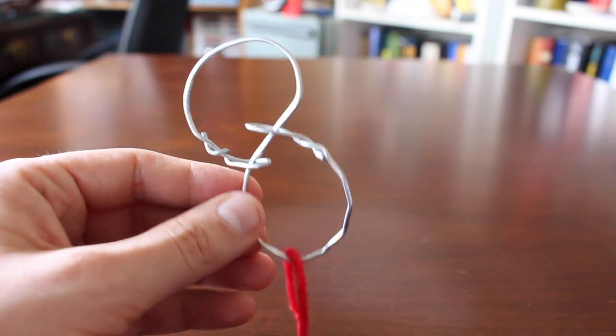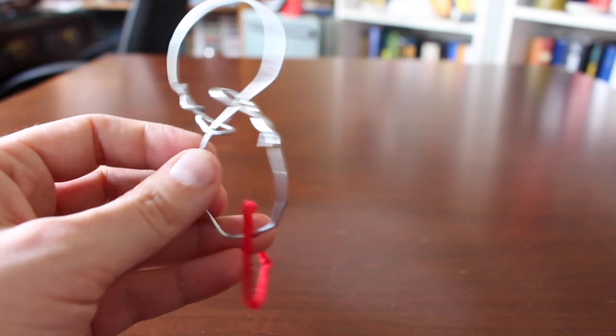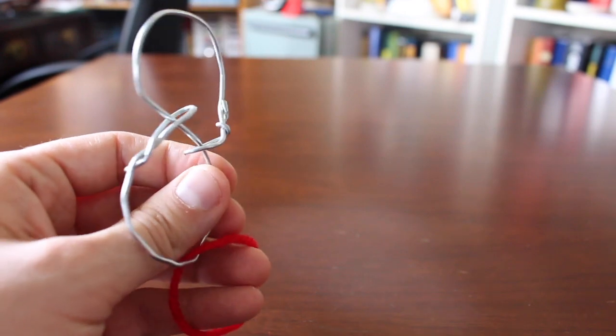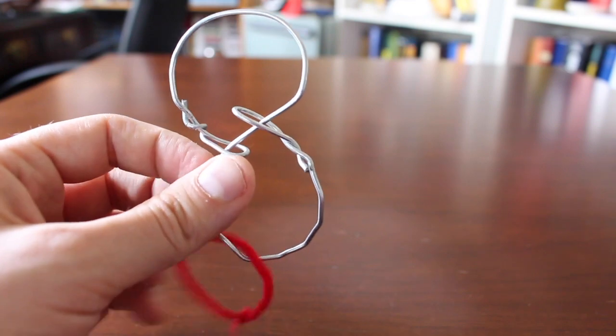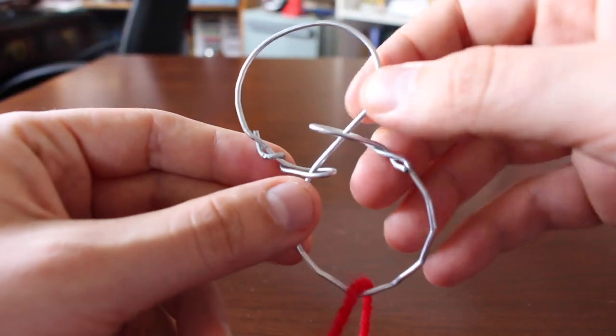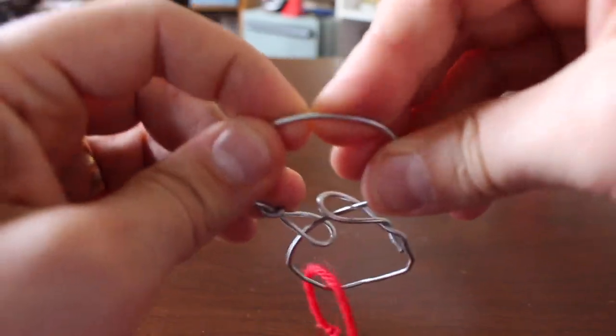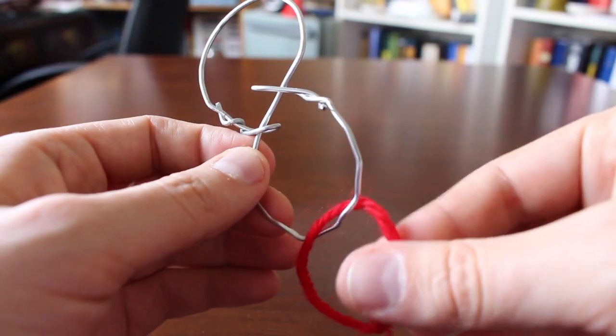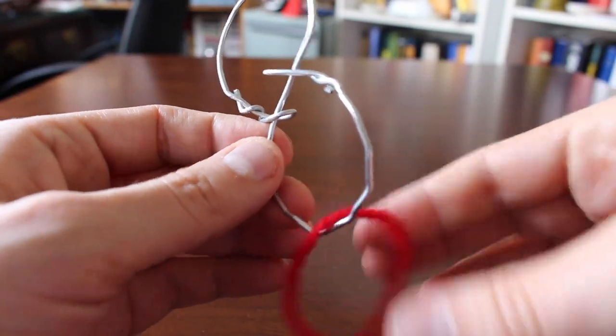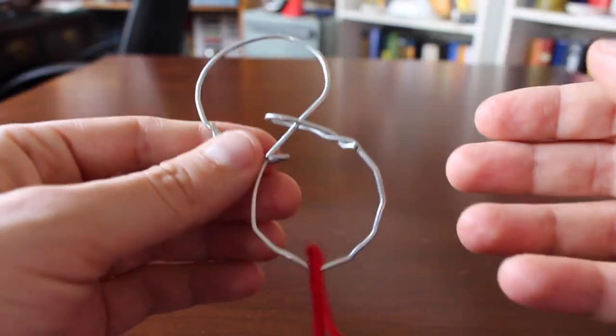One common technique that's used to prove that puzzles are impossible is to make them easier. If the easier puzzle is impossible, then the harder one has to be as well. For instance, one thing about this puzzle is that the wire is hard to bend. So if you make it out of something more flexible, like the yarn that the inner circle is made out of, that would be an easier puzzle.